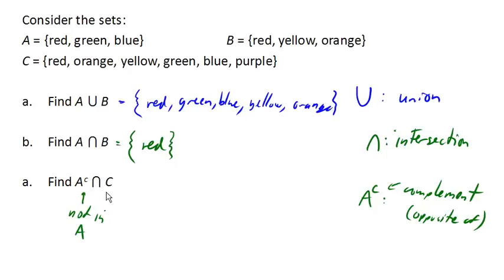So from a visual point of view, we're looking for everything that's not in A, right? So outside of A, but that intersects with or is also in C. So it needs to be inside C, but not inside A. So we're looking for this stuff here. We're looking for the stuff that's not in A, but is in C. So C is the list of all these colors here. We want the ones that are not in A. So we don't want red. We don't want green. We don't want blue. We just want the other ones. So that would be orange, yellow, and purple.